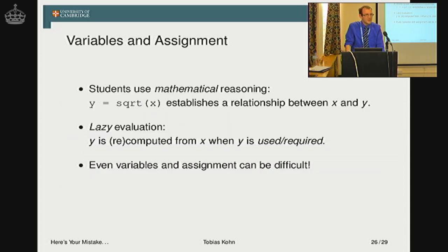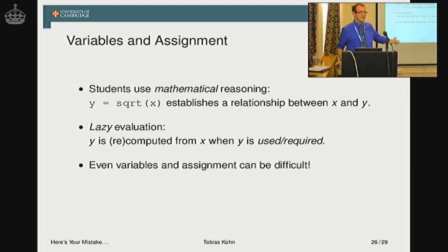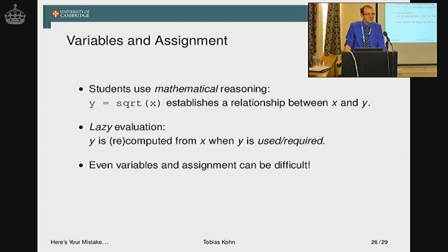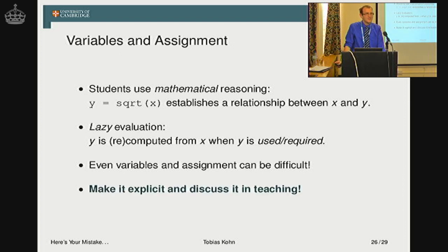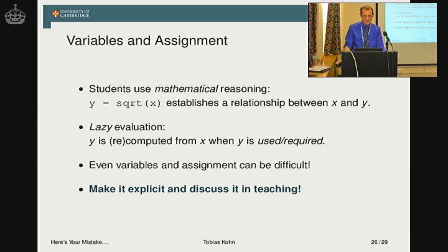I make it explicit and say: the term 'variable' or 'function' is something completely different in mathematics and computer science, and you have to be aware of that. To summarize: students use mathematical reasoning by saying that y is square root of x establishes a relationship. In computer science terms, we would say they assume lazy evaluation — they think a variable just gets evaluated when it's really used or required. It shows us that even a simple concept like variables can be very, very difficult for beginning students.